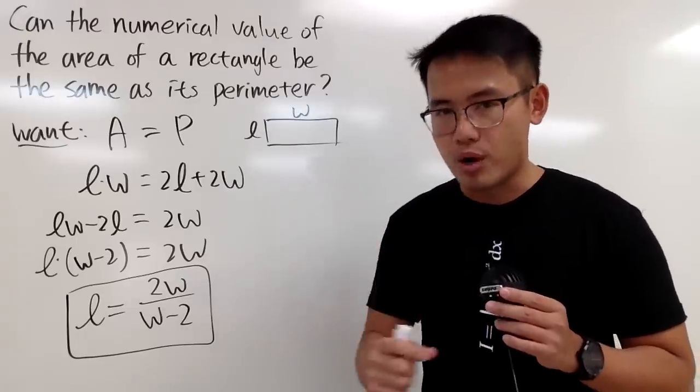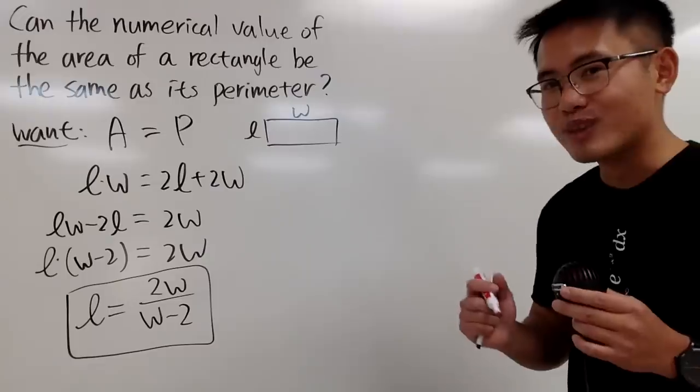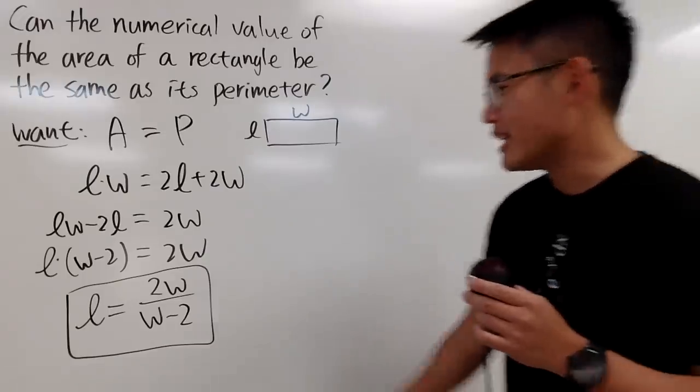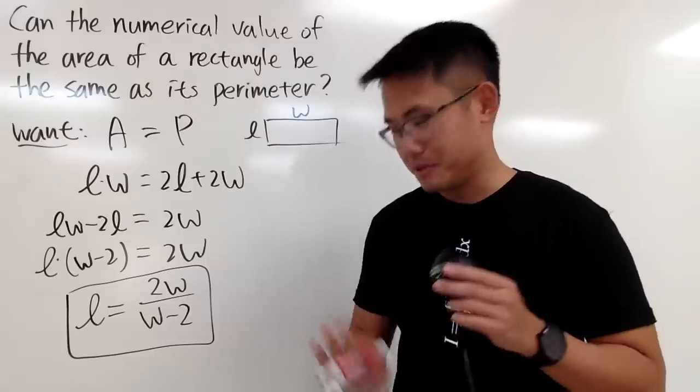Now you can just pick whatever you want for w. Of course it has to be somewhat legitimate. You cannot pick w to be one because otherwise you get negative lengths, so that's not good.